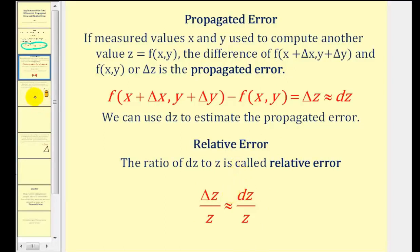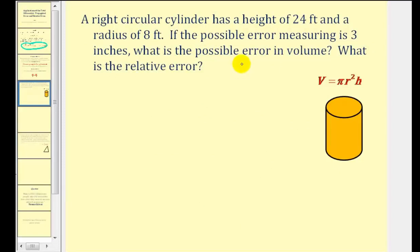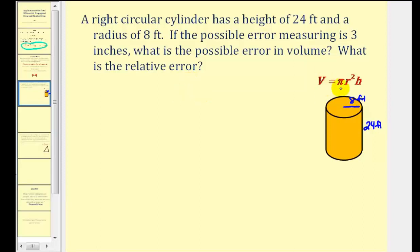Let's take a look at a couple of examples. Here we have a right circular cylinder that has a height of 24 feet and a radius of 8 feet. If the possible error in measuring is three inches, what is the possible error in volume? Here we have our volume formula: the volume is equal to pi r squared h. Before we determine the relative error, we first need to determine the propagated error, which we're going to estimate by using differential v. We can see that v is defined in terms of two variables, because pi is a constant.